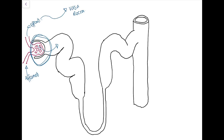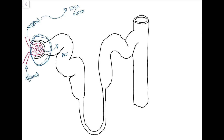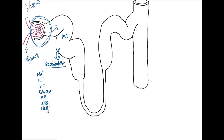At the proximal convoluted tubule, selective reabsorption of ions, water, and valuable nutrients from the initial filtrate occurs. Substances reabsorbed include sodium, chloride, potassium, glucose, amino acids, urea, bicarbonate, and water. Glucose and amino acids are reabsorbed actively, while chloride and bicarbonate are reabsorbed passively. Bicarbonate also helps maintain the pH balance of body fluids.